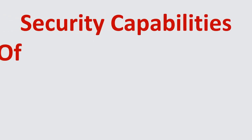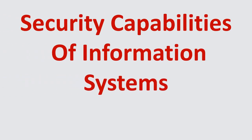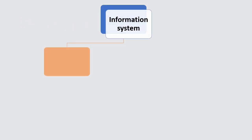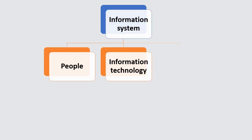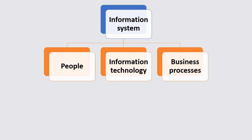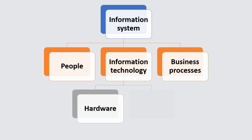Security capabilities of information systems. Information systems are the combination of people, information technology, hardware and software, and business processes to accomplish a business objective.